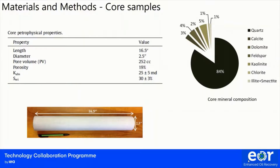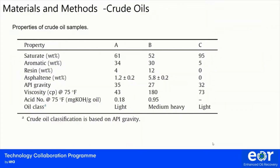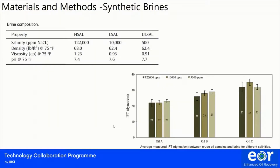Three crude oil samples were used: Crude Oil A, a Texas light crude oil; Crude Oil B, a medium-heavy crude oil; and Crude Oil C, a synthetic oil — a highly refined mineral oil with no polar components. Three different brine salinities were prepared, ranging from 500 to 122,000 ppm. The initial pH was set to 7.5, and brine viscosities ranged from 0.91 to 1.2 cp. We also measured interfacial tension between the crude oil and brine samples, and observed that IFT was nearly constant for all three brine samples and not sensitive to brine salinity.